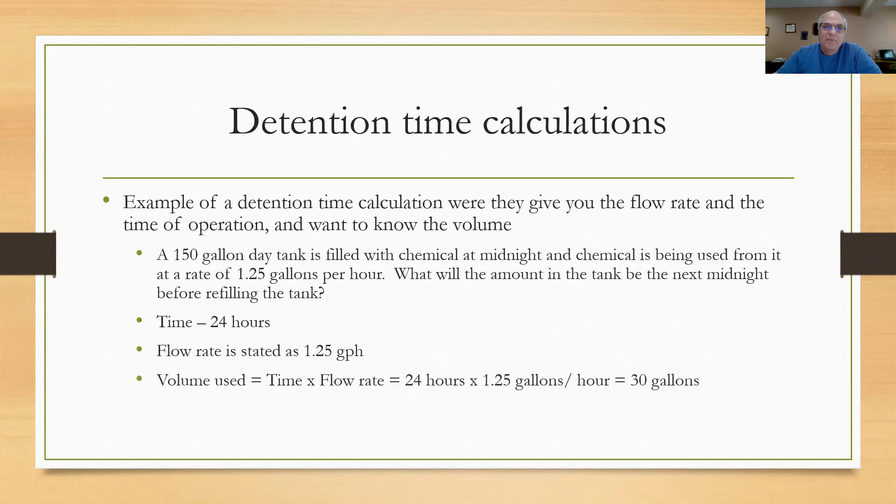I'm going to set this up this way. The volume used is the time times the flow rate, 24 hours times 1.25 gallons per hour emptying rate. So we must have used 30 gallons in 24 hours. So the volume left over from midnight to midnight would be 150 gallons minus the 30 that we used. We should expect to see 120 gallons in that tank.